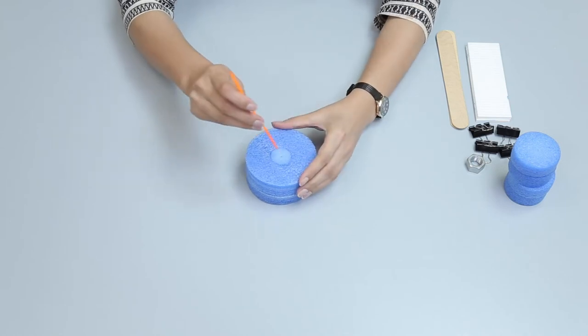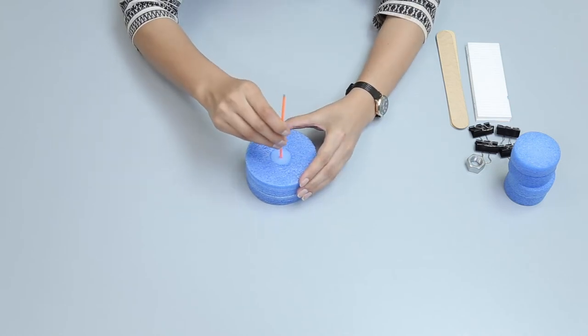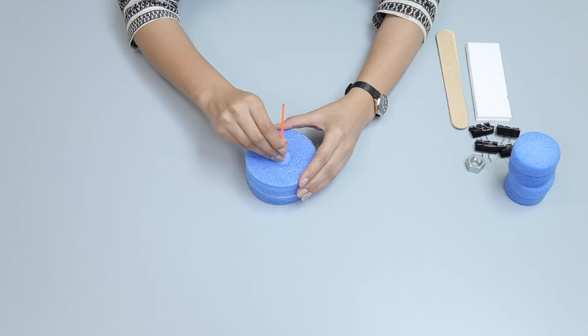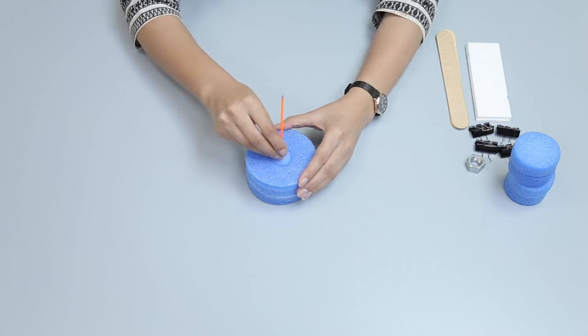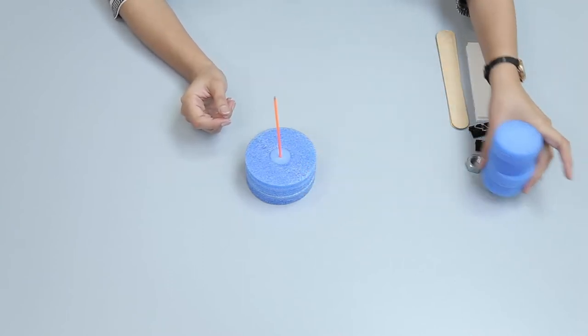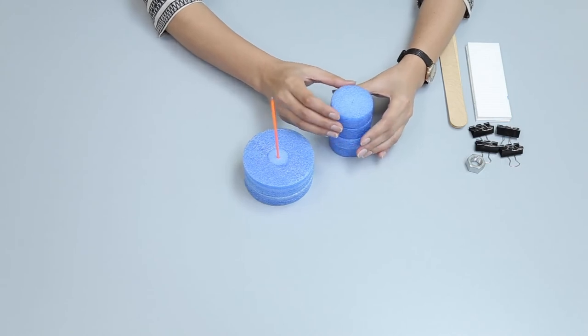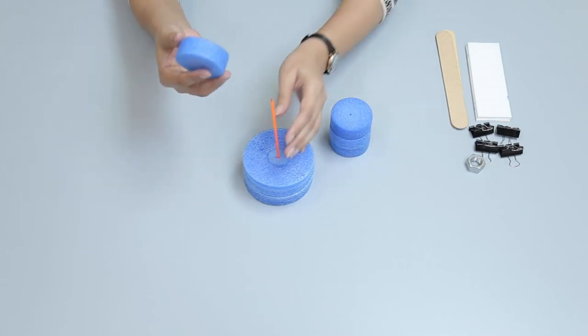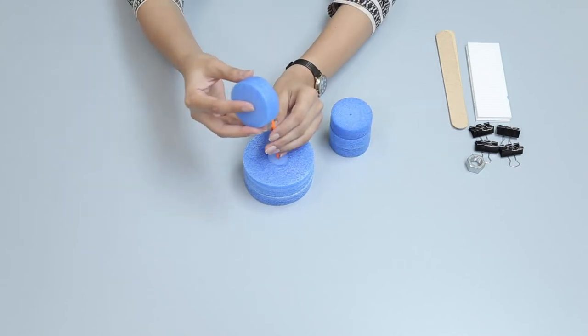Insert the plastic stick in the middle of the foam rings. Place all foam wheels on the plastic stick.